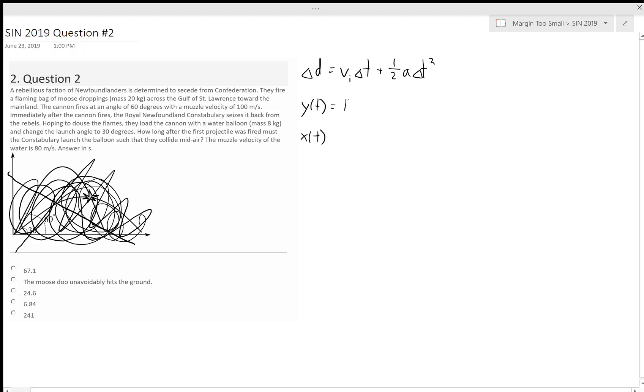We can figure out the y component and x component of position. The initial y velocity is 100 sine 60 degrees delta t minus 4.9, because acceleration due to gravity is -9.8 and half of that is -4.9. Since there's no acceleration in the x direction, the x component will just be 100 cosine 60 delta t. But that's our review.